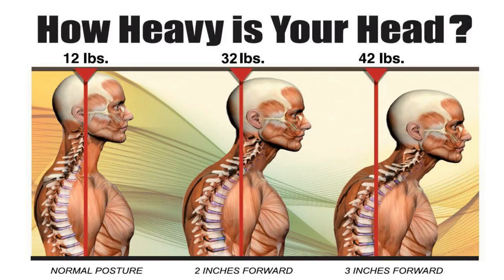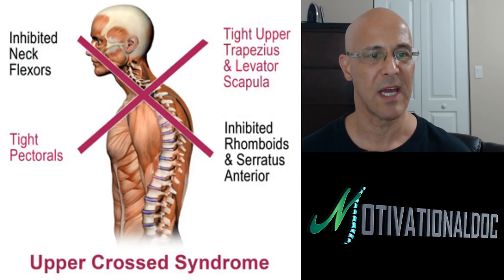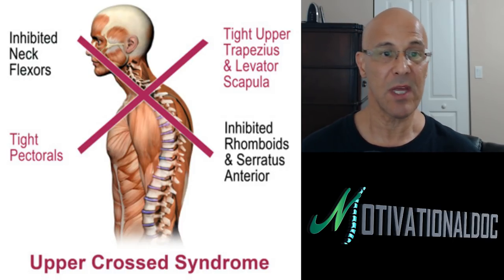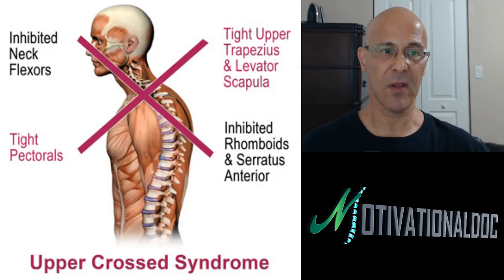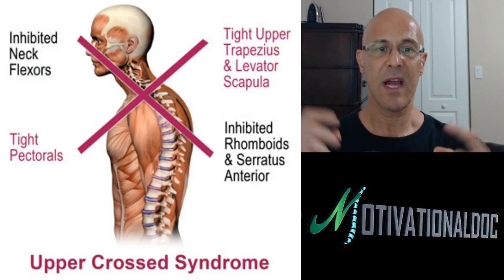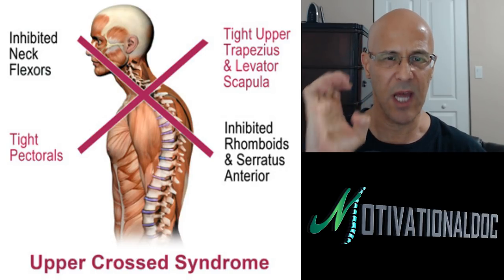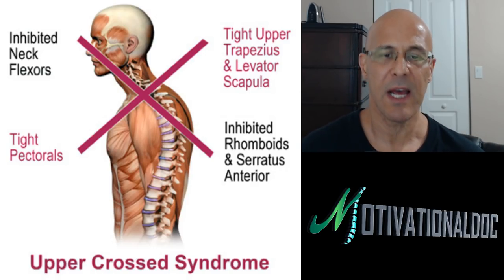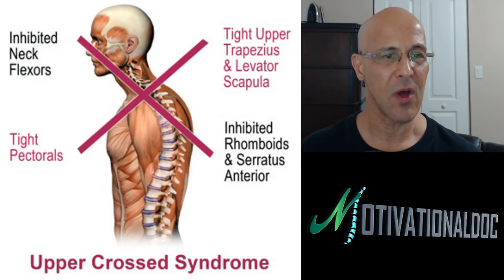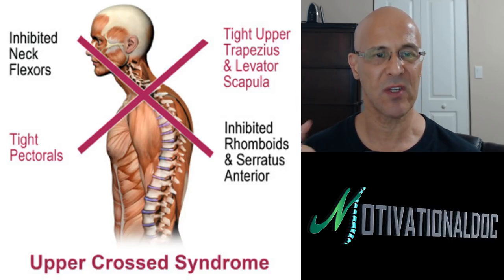When your head goes two inches forward, it's effectively 32 pounds of weight that muscles, ligaments, and tendons must support. At three inches forward, that's 42 pounds — wearing and tearing, causing herniated discs and pinched nerves. This is upper cross syndrome: tightness in the front — the pectoralis muscles — which is the number one cause of shoulders going forward. I'll show you stretches and how to strengthen these weakened muscles.